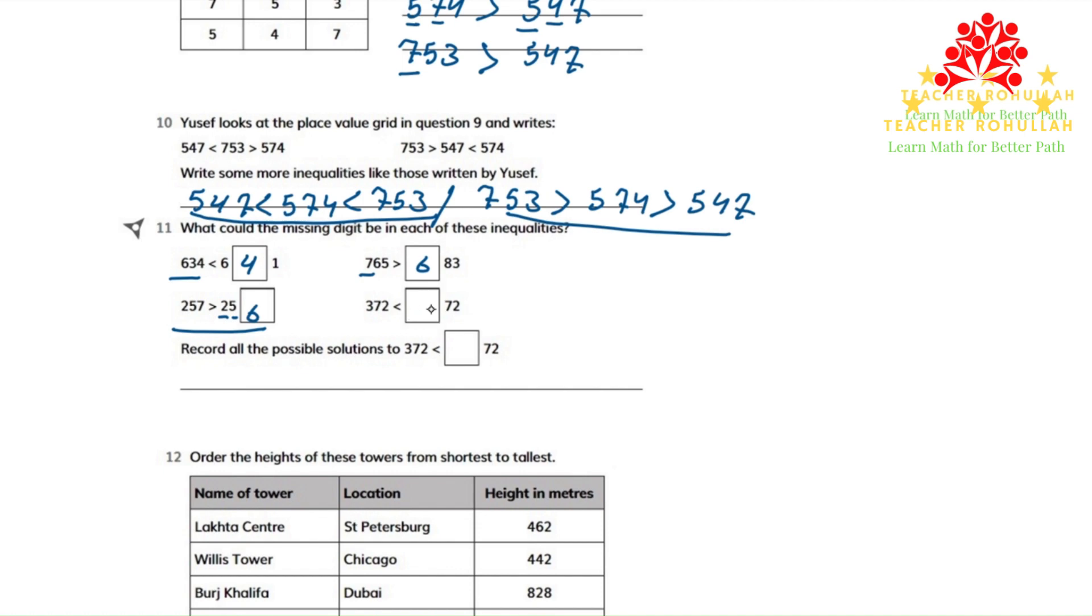In the fourth one, the missing number is in the hundreds place. So the number to the left is 372, which is less than the number to the right. So the number that comes in the missing part is 4. Because in the hundreds place in the left number, we have 3, and the number to the right should be bigger than that. So it is 472.